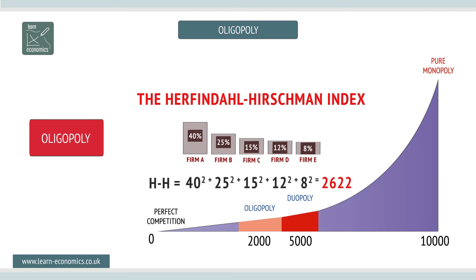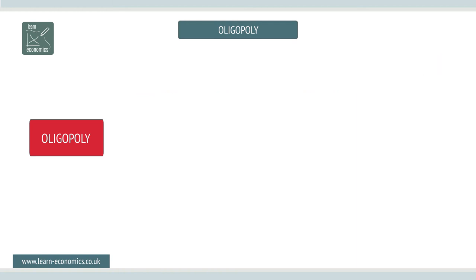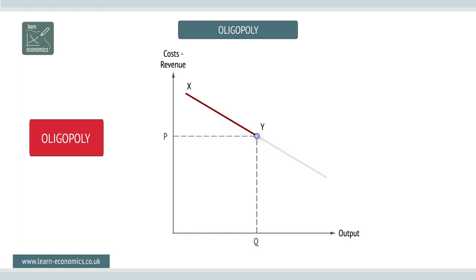Oligopolists are dependent on each other, a condition called mutual interdependence. The oligopolist faces two demand scenarios: firstly, when demand is elastic to a price increase, and secondly, when demand is inelastic to a price drop.